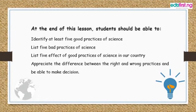So by the end of this class, we should be able to identify at least five good practices of science and five bad practices of science. We should also be able to list five effects of good practices of science in our country and appreciate the difference between right and wrong practices, and also be able to make decisions based on your understanding of these practices.